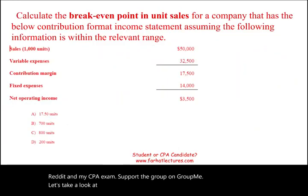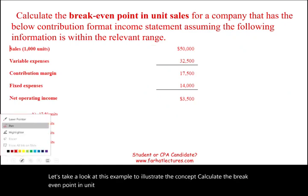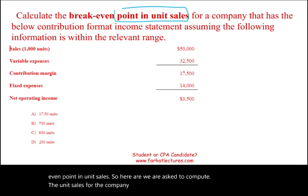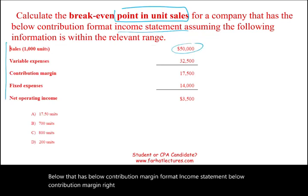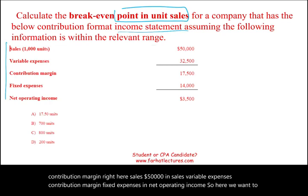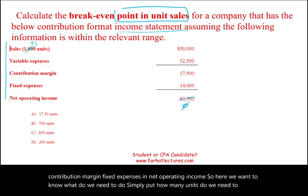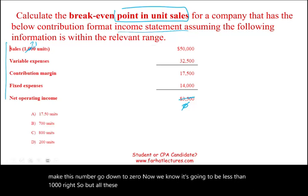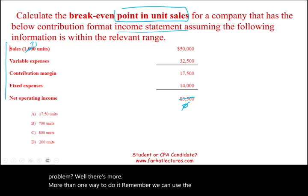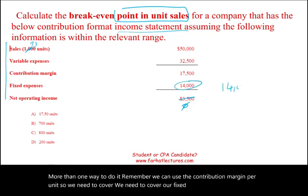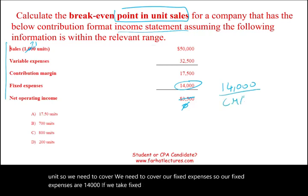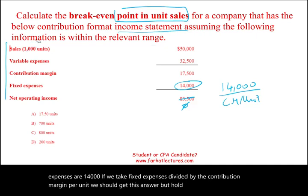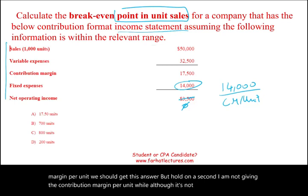Calculate the break-even point in unit sales for a company with the following contribution margin format income statement: $50,000 in sales, variable expenses, contribution margin, fixed expenses of $14,000, and net operating income. We want to know how many units to sell to bring net operating income to zero. We use fixed expenses divided by contribution margin per unit, but the CM per unit isn't directly given — we need to derive it.